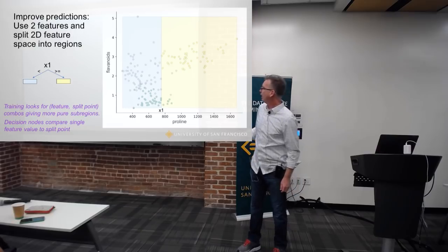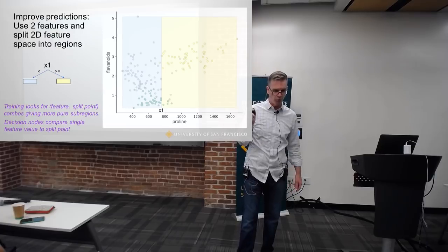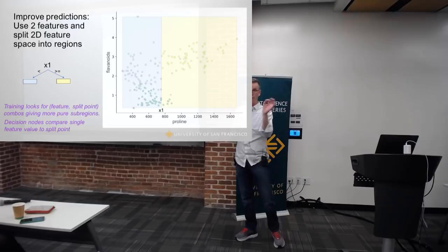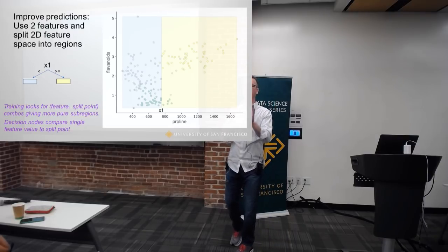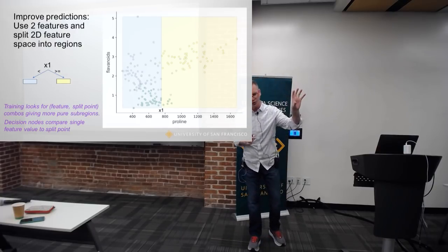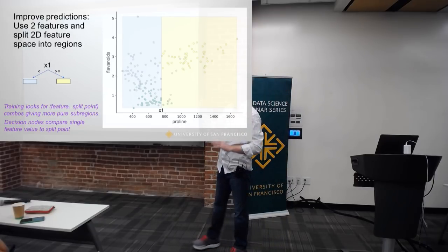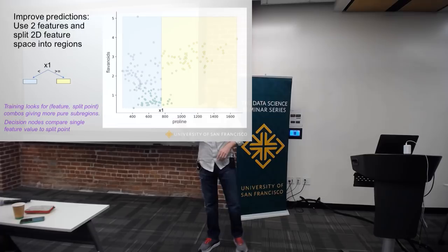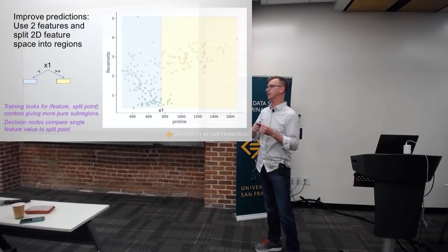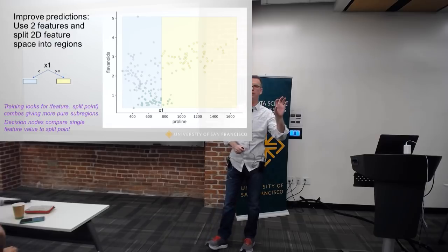The difference with two variables from one variable is: with one variable I say, find the value for vehicle weight that gives me the minimum error — that's the split point I want. Now I'm saying find a combination of feature and feature value. It could be that one variable is better for splitting than the other. Where in that feature space I split depends on the values in there. So now I've expanded my search space — it's not just exhaustively testing feature values, it's exhaustively testing combinations of feature and feature value.